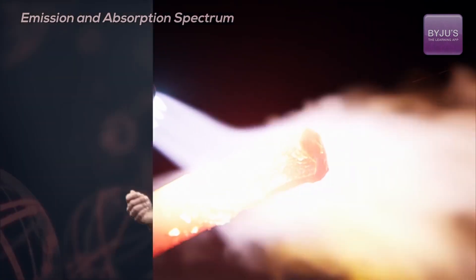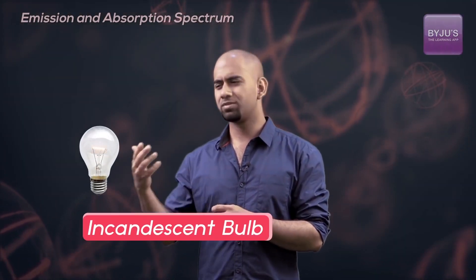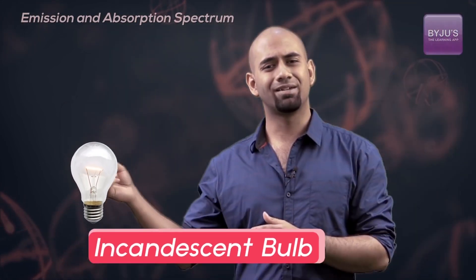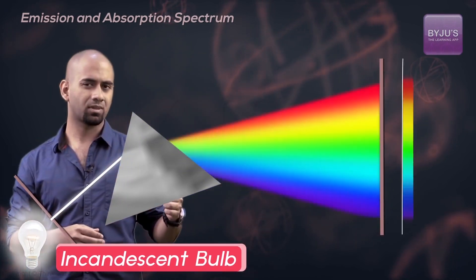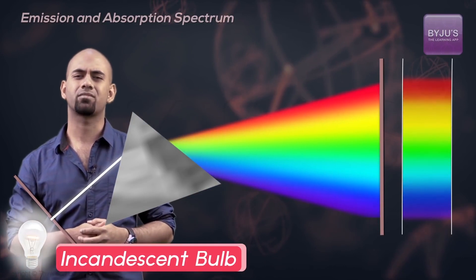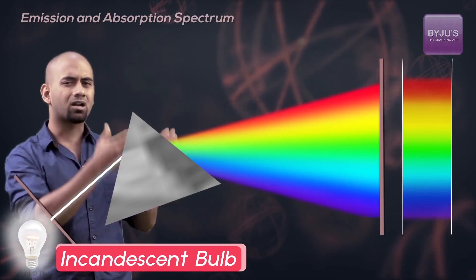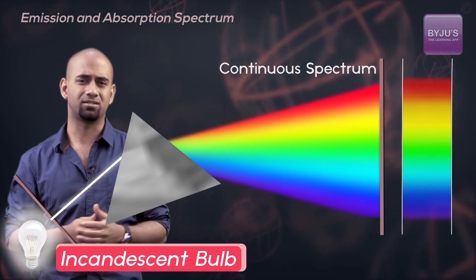If I take an incandescent light bulb, which is basically a heated tungsten filament giving out radiation in the form of light, and pass this light through a prism and keep a screen behind me, I'll get a continuous set of colors or a continuous spectrum.